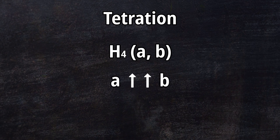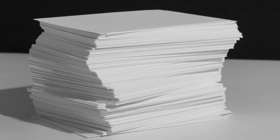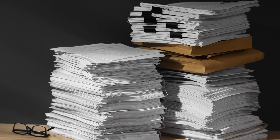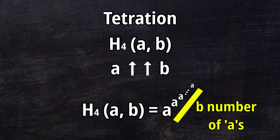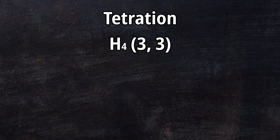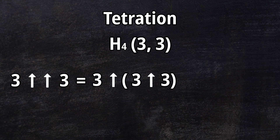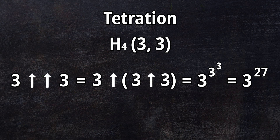Now let's talk about h4, or a ↑↑ b. If multiplication is stacked addition and exponentiation is stacked multiplication, then h4 is stacked exponentiation. So h4(a, b) is a to the power of a, and this power to the power of a, and so on, b times. So h4(3, 3) is 3 ↑↑ 3, which is 3 ↑ (3 ↑ 3), which equals 3 to the 3rd power and this 3rd power to the 3rd power — which is 3 to the 27th power... that much.